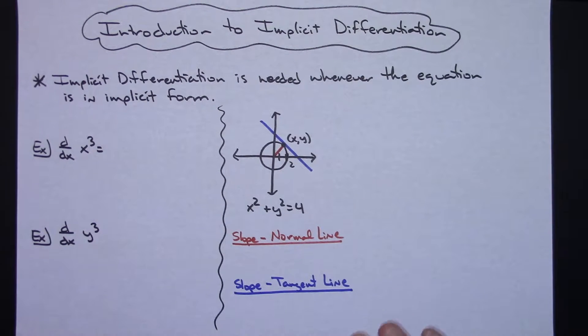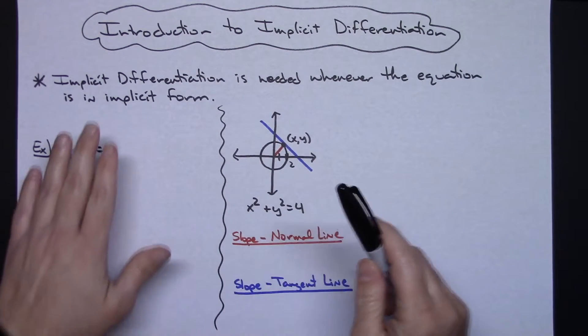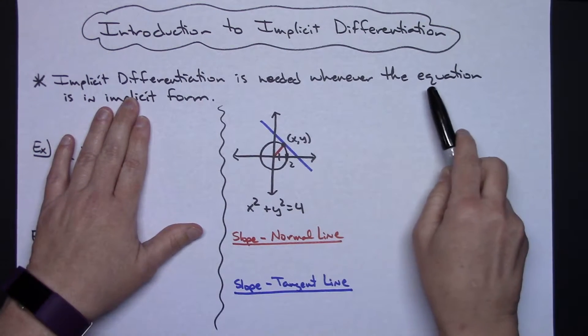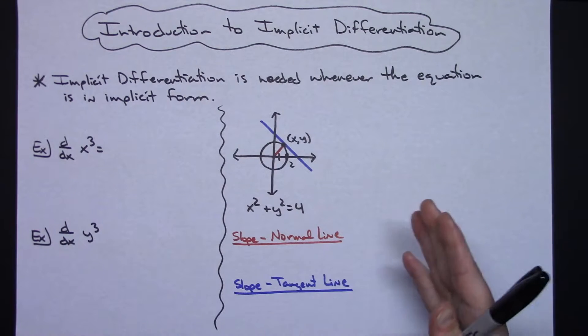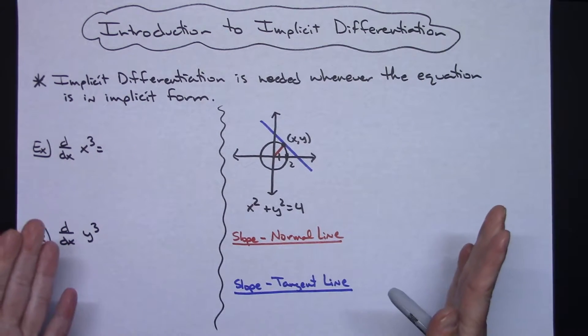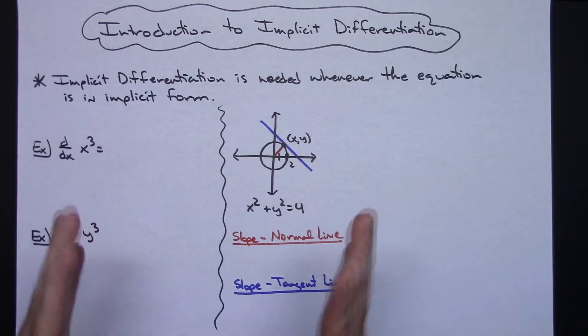In this video, I'm going to do a brief introduction to implicit differentiation, just kind of getting you to understand the underlying concepts of when and how this type of differentiation is different than other forms. So first off, implicit differentiation is needed whenever the equation is in implicit form. Basically, it means your x's and y's are all mixed up in your equation.